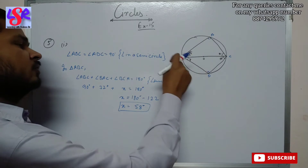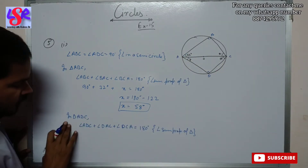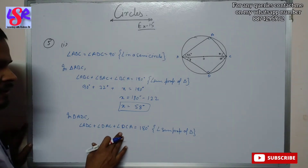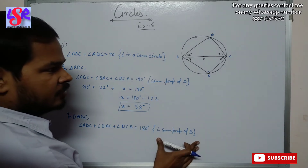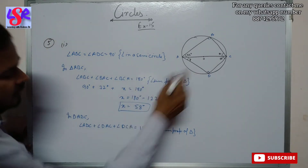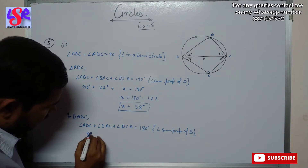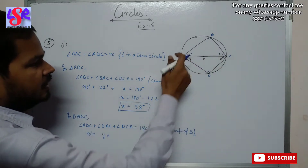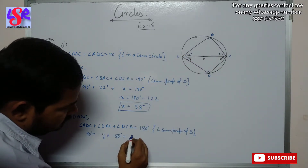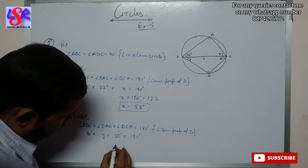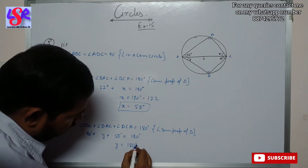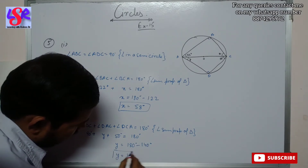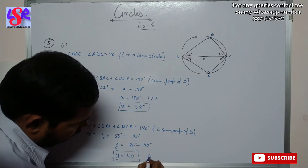To find the value of Y, we take triangle ADC. Angle ADC plus angle DAC plus angle DCA equals 180 degrees as angle sum property of triangle. Angle ADC is 90 degrees, angle DAC is Y, and angle DCA is 50 degrees. So Y equals 180 minus 140, giving us Y equals 40 degrees.